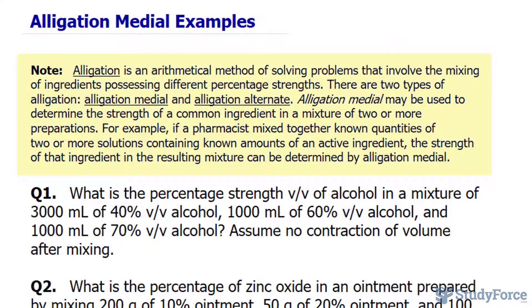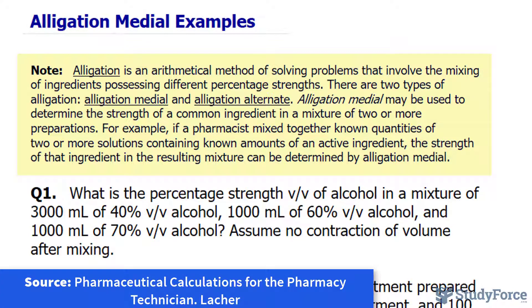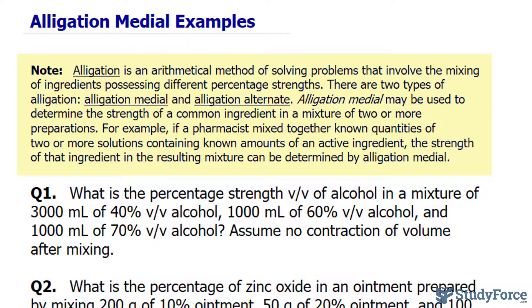Allegation is an arithmetic method of solving problems that involve the mixing of ingredients possessing different percentage strengths. There are two types of allegation: allegation medial and allegation alternate. Allegation medial may be used to determine the strength of a common ingredient in a mixture of two or more preparations.